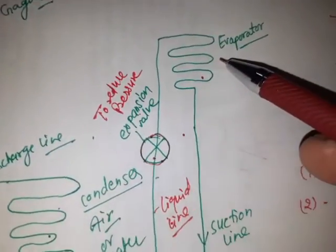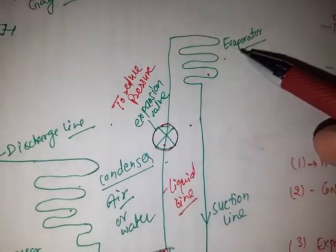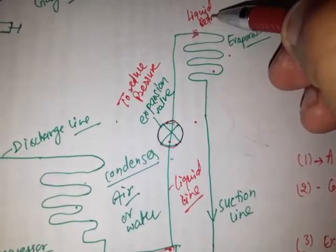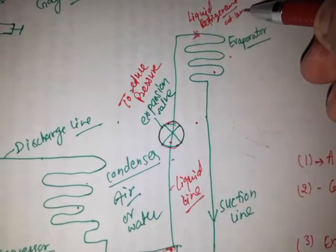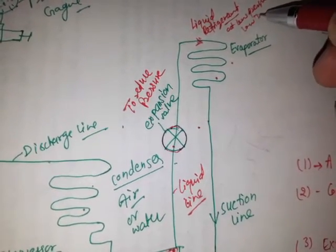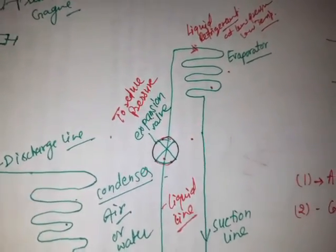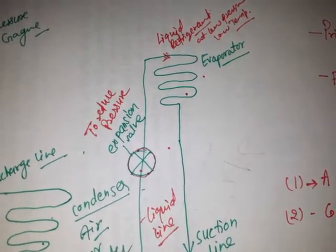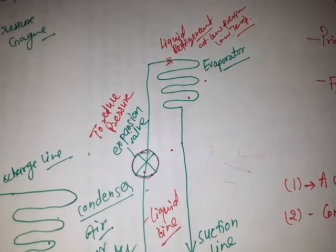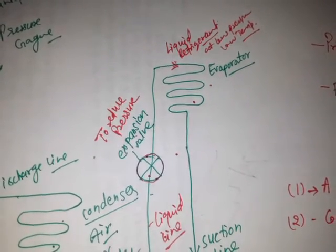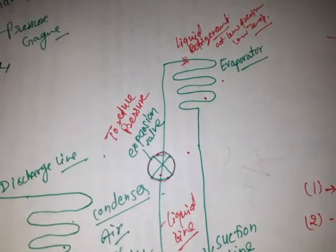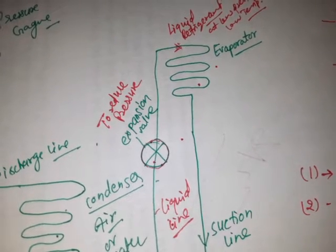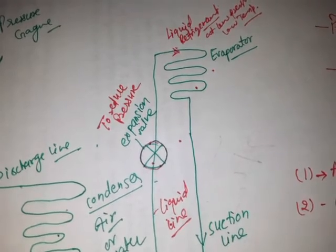The next part is the evaporator. When liquid refrigerant enters at the inlet of the evaporator, it is at low pressure and low temperature. When this low pressure and low temperature liquid refrigerant enters the evaporator, it suddenly expands and takes the latent heat from the evaporator, because the temperature of the evaporator is lower than the surrounding temperature, so it absorbs heat from the surrounding or refrigerated space, and evaporation takes place producing cooling.